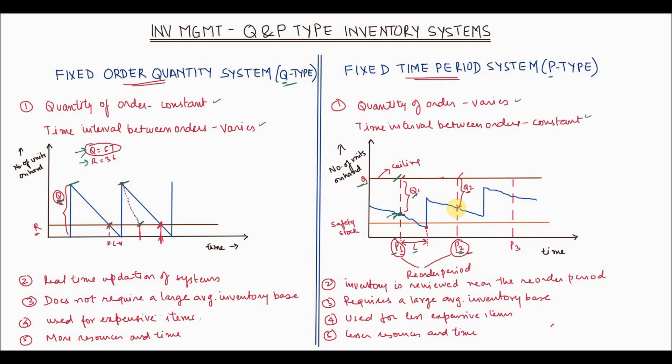When the second period hits, again the inventory level may be more than what it was in the first period. So again the quantity is calculated which is the ceiling minus the on hand inventory, and let's say it is Q2 this time. Then the order placed is Q2 quantity on the vendor and subsequently this cycle continues for all the other periods. As you can see in this type, your quantity keeps on varying whereas the period is constant. So this is why it is called as P type of system.